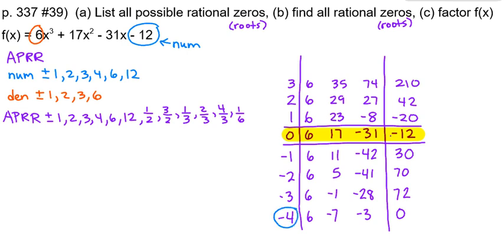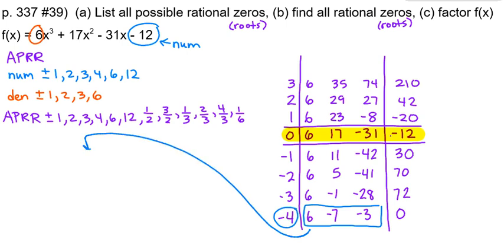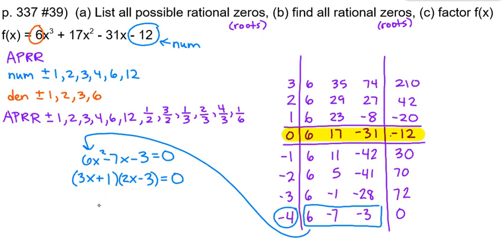Even though there are two more roots to find, the numbers in the negative 4 row represent the remaining polynomial. Since we started with a cubic (degree 3) and divided by one linear factor, we're left with a quadratic (degree 2). So let's write that as 6x² minus 7x minus 3, set it equal to zero, and solve for x to get the last two roots. This one is factorable.